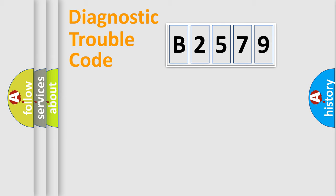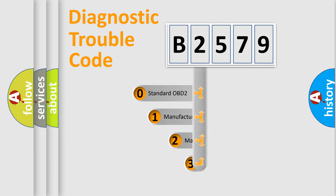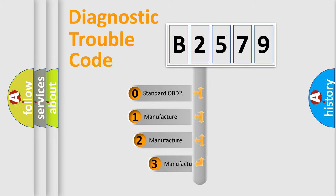The four units are: Powertrain, Body, Chassis, and Network. This distribution is defined in the first character of the code.